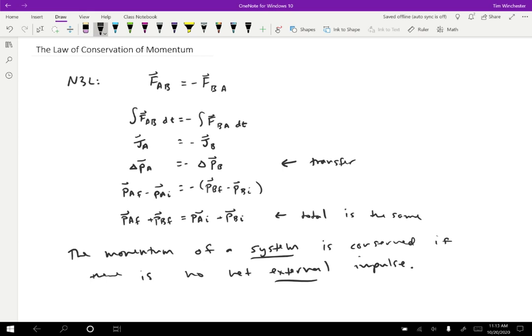Momentum is able to transfer from one particle to another, but it can't just vanish. It has to either leave the system because of an external impulse, or it has to go from one place to another.